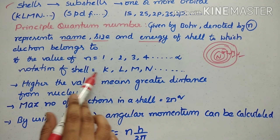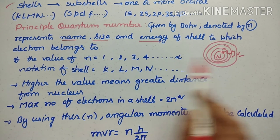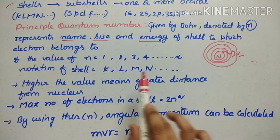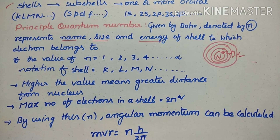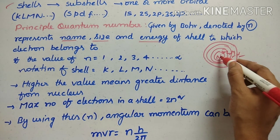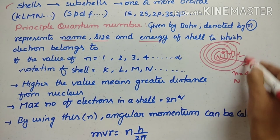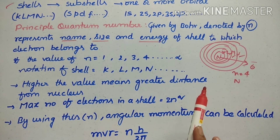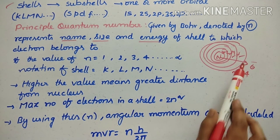If n equals 1, the shell is represented as K; if n equals 2, it is L. A higher value of n means greater distance from the nucleus — for example, n equals 4 indicates the electron's shell is farther from the nucleus.